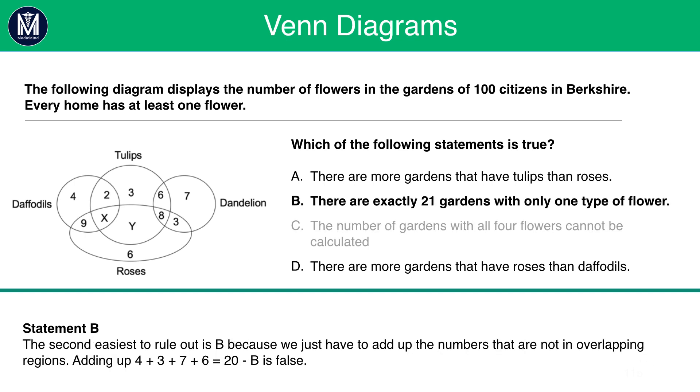The second easiest rule out is B. There are exactly 21 gardens with only one type of flower. Now to work this out, we just have to work out the numbers that are not in any overlapping regions. For daffodils, this is four. For tulips, this is three. For dandelions, this is seven. And for roses, it's six. That's 20, meaning B is also false.